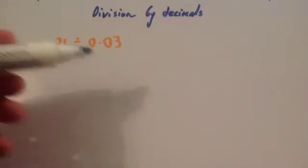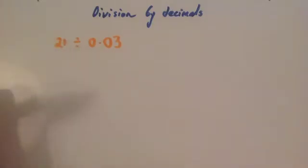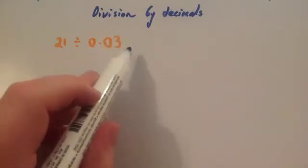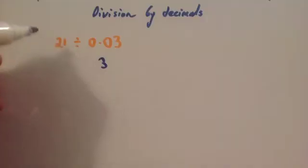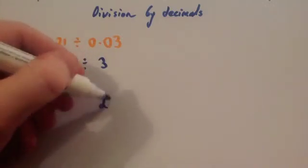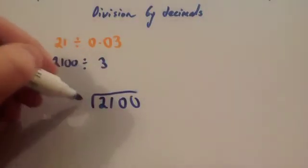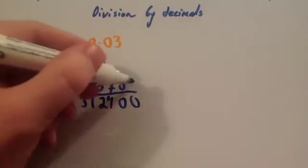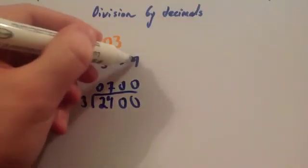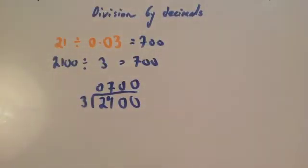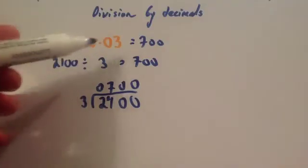Now we're going to do 21 divided by 0.03. Dividing by 0.03 is quite tricky — multiplying by 10 would still give 0.3, so this time we multiply by 100. 0.03 × 100 = 3, and 21 × 100 = 2100. So we do 2100 divided by 3 using short division: 3 into 2 doesn't go — remainder 2. 3 into 21 goes 7 times. Then 0 and 0. The answer is 700, so 21 divided by 0.03 equals 700.